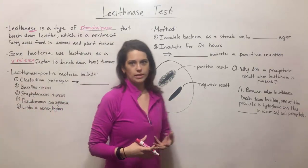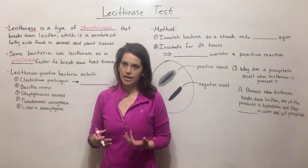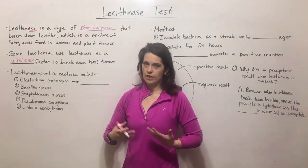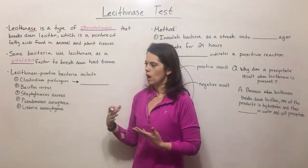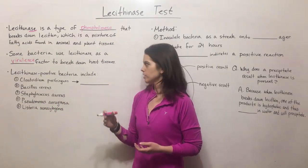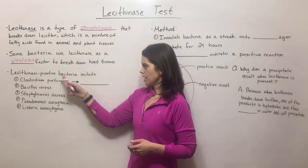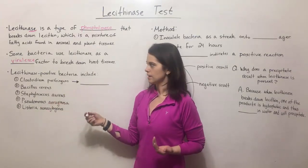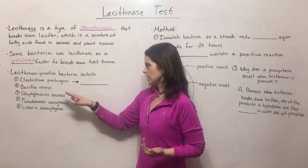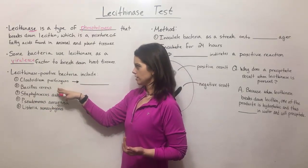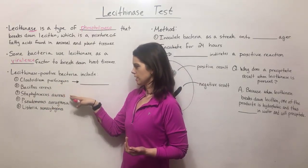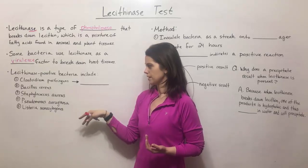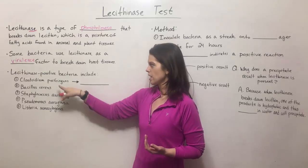It enables bacteria to break down host tissues, including various tissues in humans, to help them establish disease. There are a variety of different kinds of bacteria that produce lecithinase, including Clostridium perfringens, Bacillus cereus, Staphylococcus aureus, Pseudomonas aeruginosa, and Listeria monocytogenes.